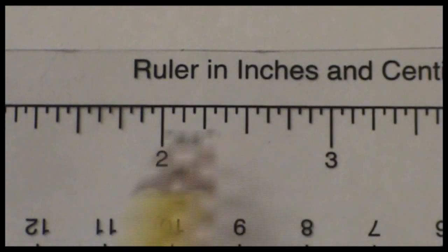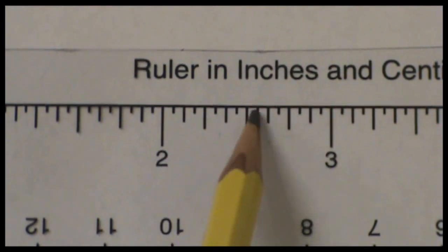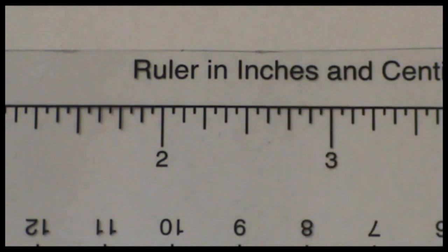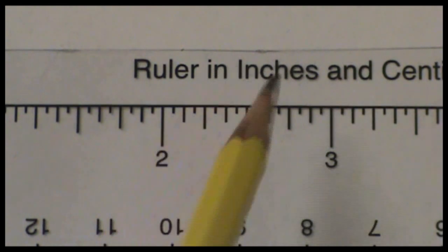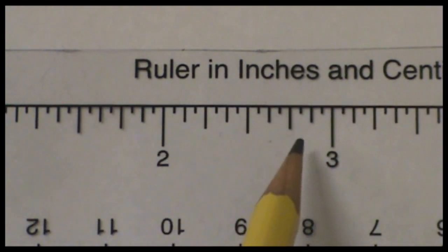As I look between the 2 and the 3, there are many different tick marks. As I count the number of tick marks between 2 and 3: 1, 2, 3, 4, 5, 6, 7, 8, 9, 10, 11, 12, 13, 14, 15, 16. There are 16 tick marks between 2 and 3. That means there's 16 units between those two numbers. This is going to be base 16.